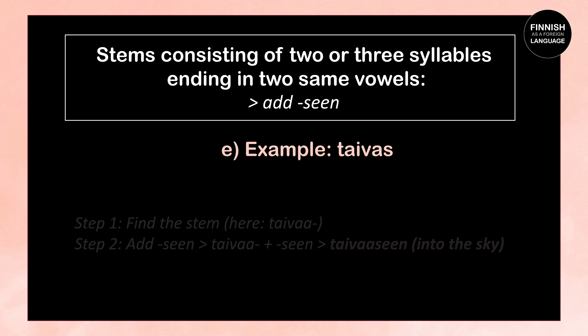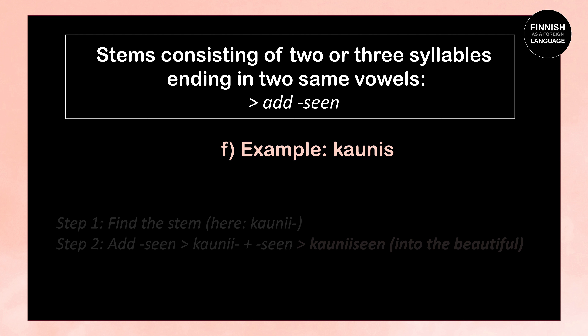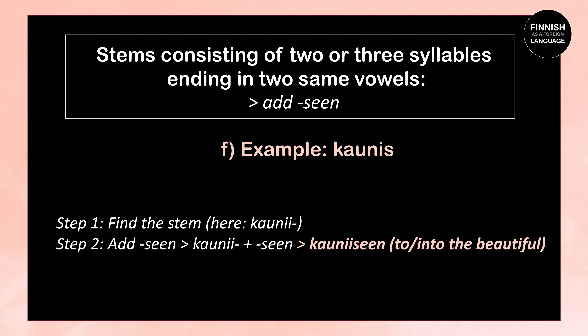Two more examples: taivas, which means sky. The stem is taivaa (with double a). We add -seen: taivaa + seen = taivaaseen, which means into or to the sky. And kaunis, which means beautiful — the stem is kaunii — we add -seen to get kauniiseen, which means into the beautiful.